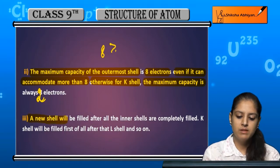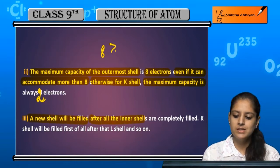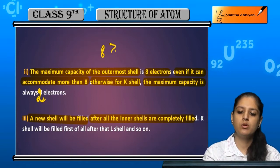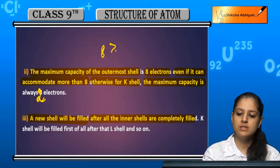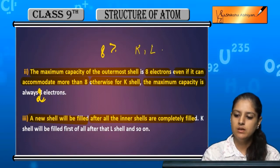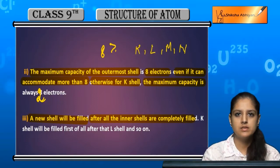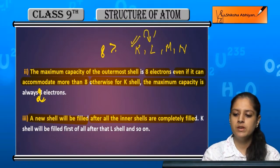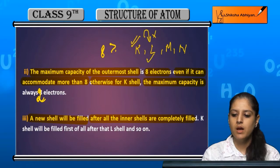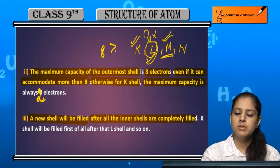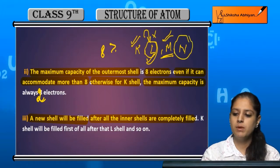The third rule is that a new shell will begin to be filled only after all the inner shells are completely filled. For example, with shells K, L, M, and N: when K is not filled completely, we will not fill L. When L is filled completely, only then do we move to M. After M is completely filled, we move to N.